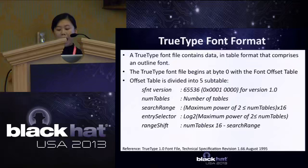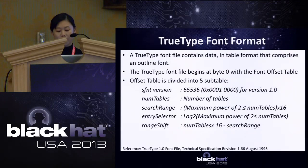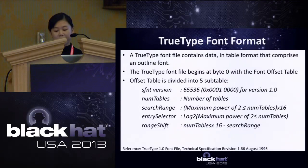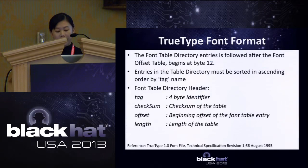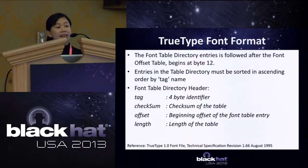Before developing our own TrueType font binary template, we needed to understand the TrueType font structure. The TrueType font begins at byte 0 with the font offset table, which is divided into 5 sub-fields: SFNT version, number of tables, search range, entry selector, and range shift. A basic font is composed of multiple tables specified in each header, and a table name can have up to 4 letters. The font table directory entries follow the font offset table; each entry consists of 4 fields: tag, checksum, offset, and length.